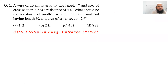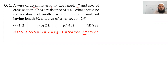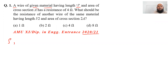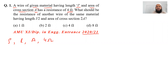So, dear students, we have these questions from chapter Electricity, which is from 2020-2021. A wire of given material — meaning a particular resistivity material — having length L and area of cross-section A has a resistance of 4 ohms. This information is given in the first line.